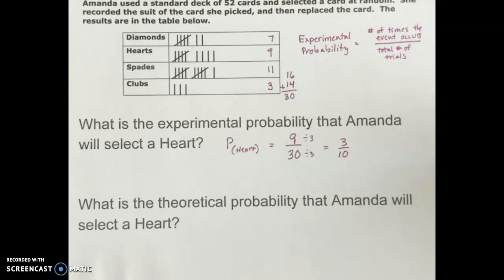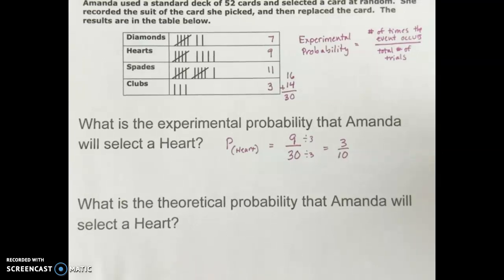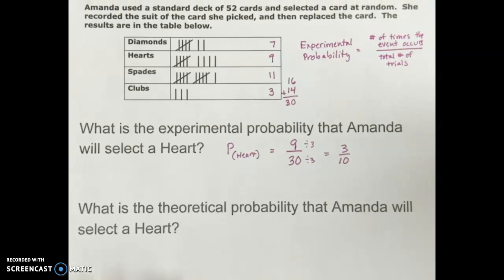Just to compare that back to what we have been working on, theoretical probability. Remember that theoretical probability is the number of ways that an event can occur over the total possible outcomes. So the theoretical probability of selecting a heart is 13 because there are 13 hearts in a standard deck of cards out of 52 possible cards altogether. This can be simplified. So the theoretical probability of selecting a heart at random would be one out of four.